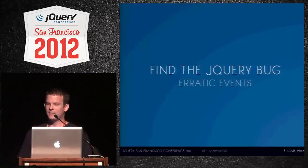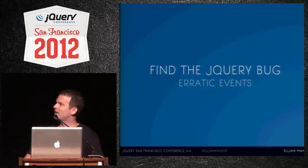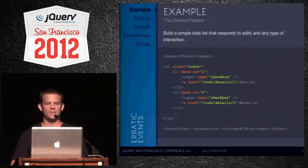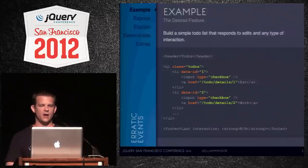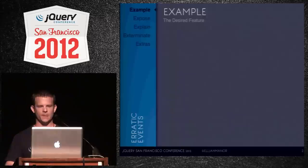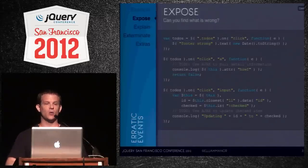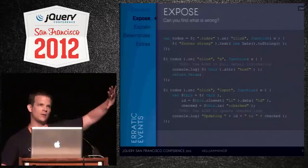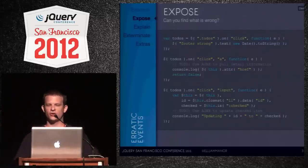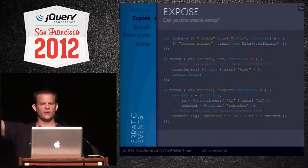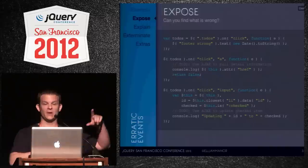I call this one 'erratic events.' We have a simple to-do app. Each list item has a checkbox and an anchor. We listen for clicks anywhere in the unordered list and update a timestamp showing when it was last interacted with. When the anchor is clicked, we simulate pulling info from a server and showing a dialog. The developer uses return false to prevent the anchor from navigating away.